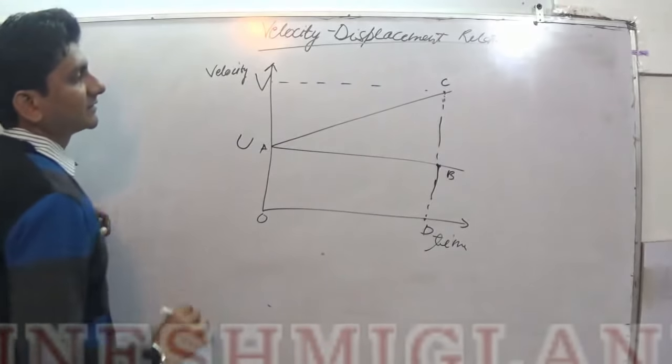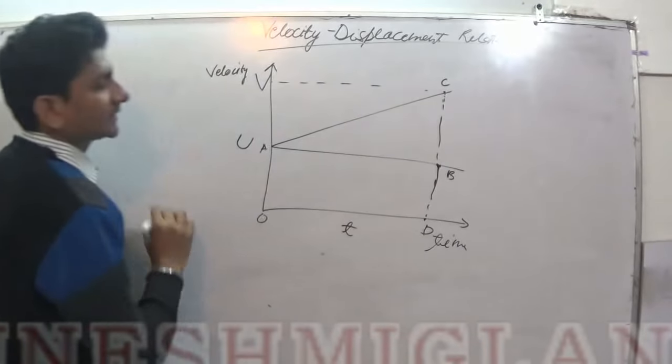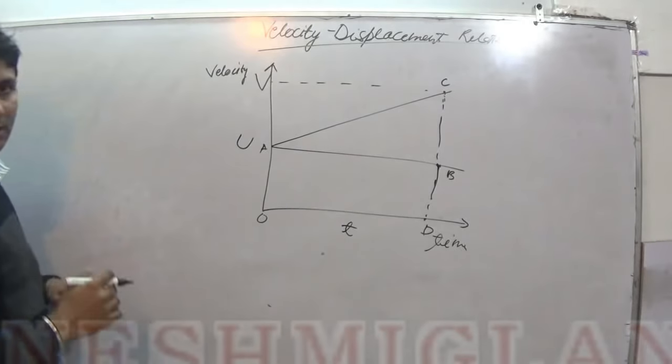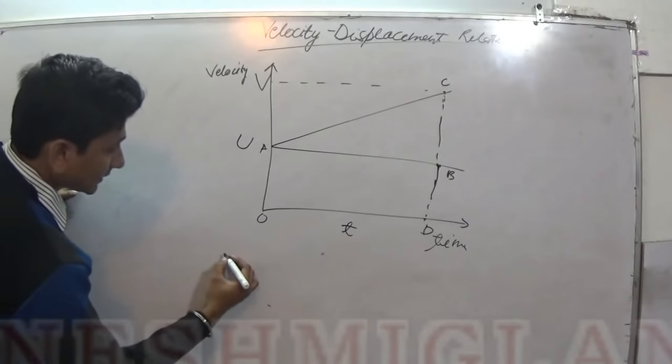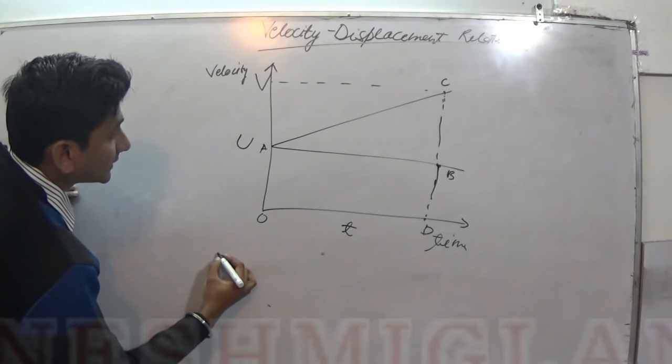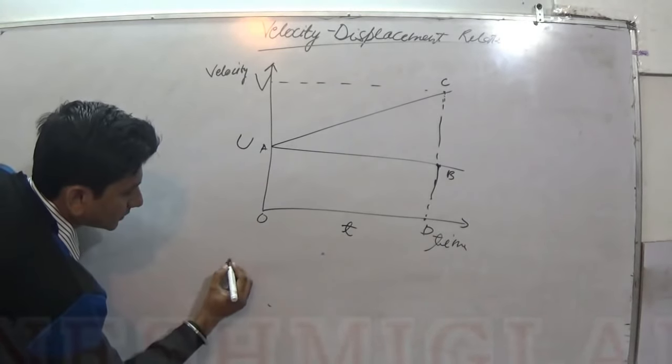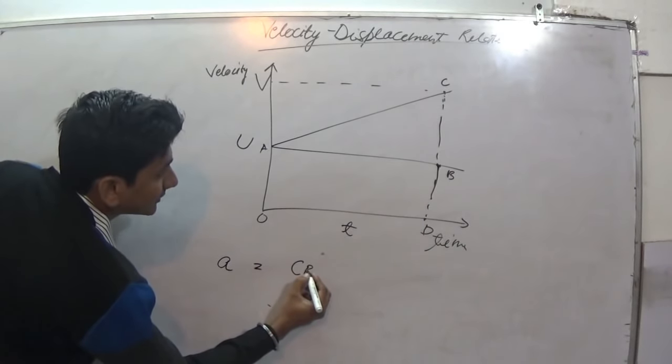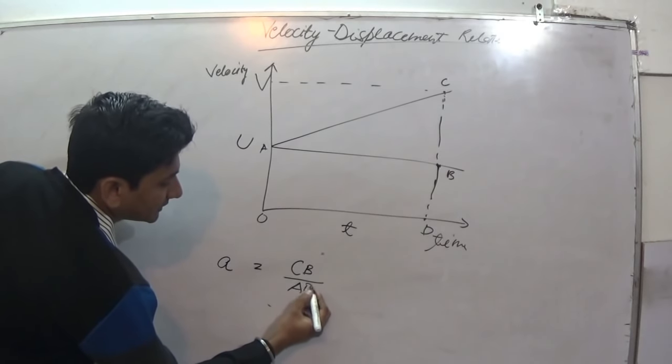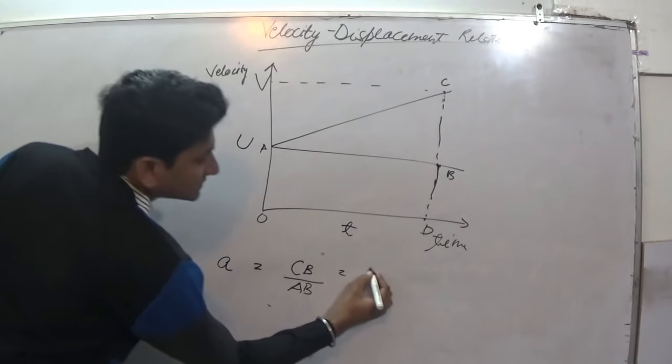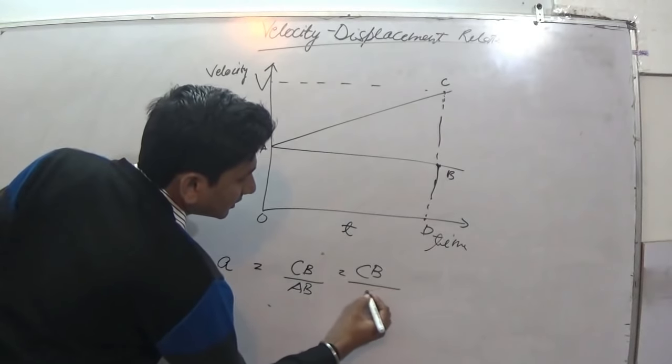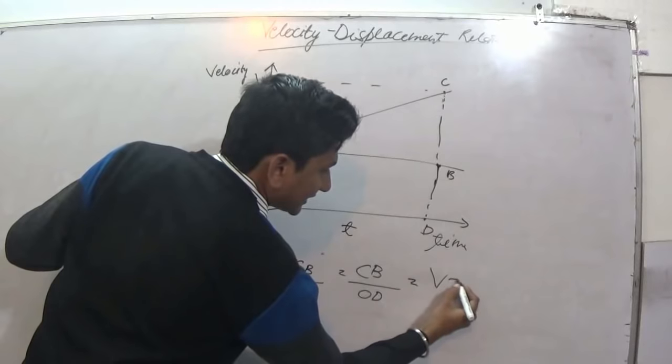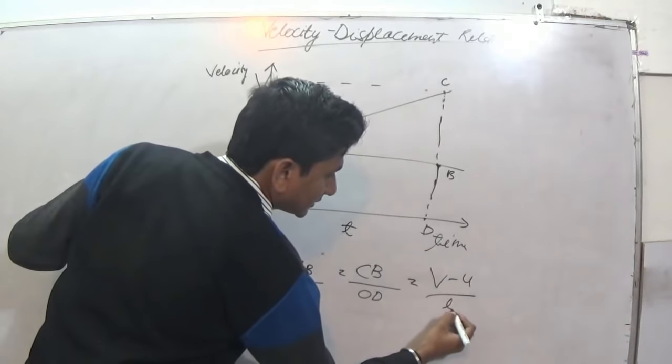Initial velocity u, velocity time relation point d, ad, v final velocity, t time. So here we get what? Again, a is equal to CB upon AB is equal to CB upon OD is equal to v minus u upon t.